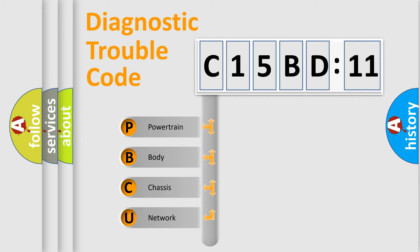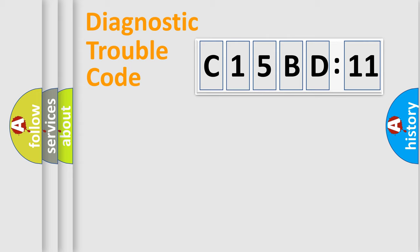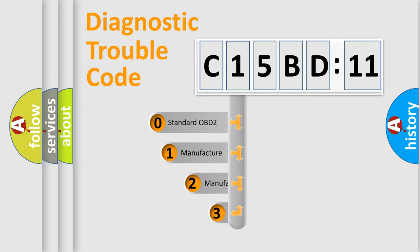We divide the electric system of automobile into four basic units: Powertrain, Body, Chassis, and Network. This distribution is defined in the first character code.